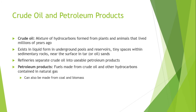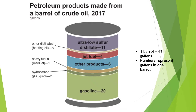Now let's discuss about petroleum products. Fuel made from crude oil and other hydrocarbons contained in natural gas can also be made from coal and biomass. This chart shows the products and byproducts obtained from one barrel, or 42 gallons, of petroleum or crude oil.